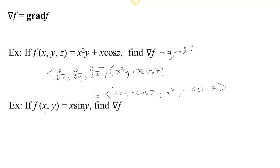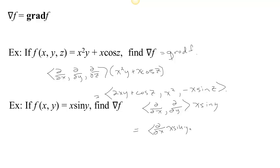If you have a function with just two inputs, then the gradient is just the del operator with only two components — d/dx and d/dy — since there's no z. So if we have a function like f(x,y) = x·sin(y), we apply that shorter del operator: d/dx of x·sin(y) gives sin(y), and d/dy of x·sin(y) gives x·cos(y). That's our gradient.